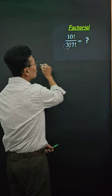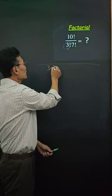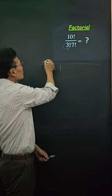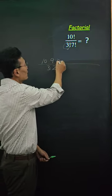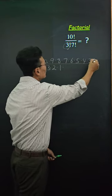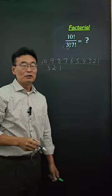3 factorial means to do 3 times 2 times 1. Same thing with the 10 factorial, it means to do 10 times 9, 8, all the way down to 1.